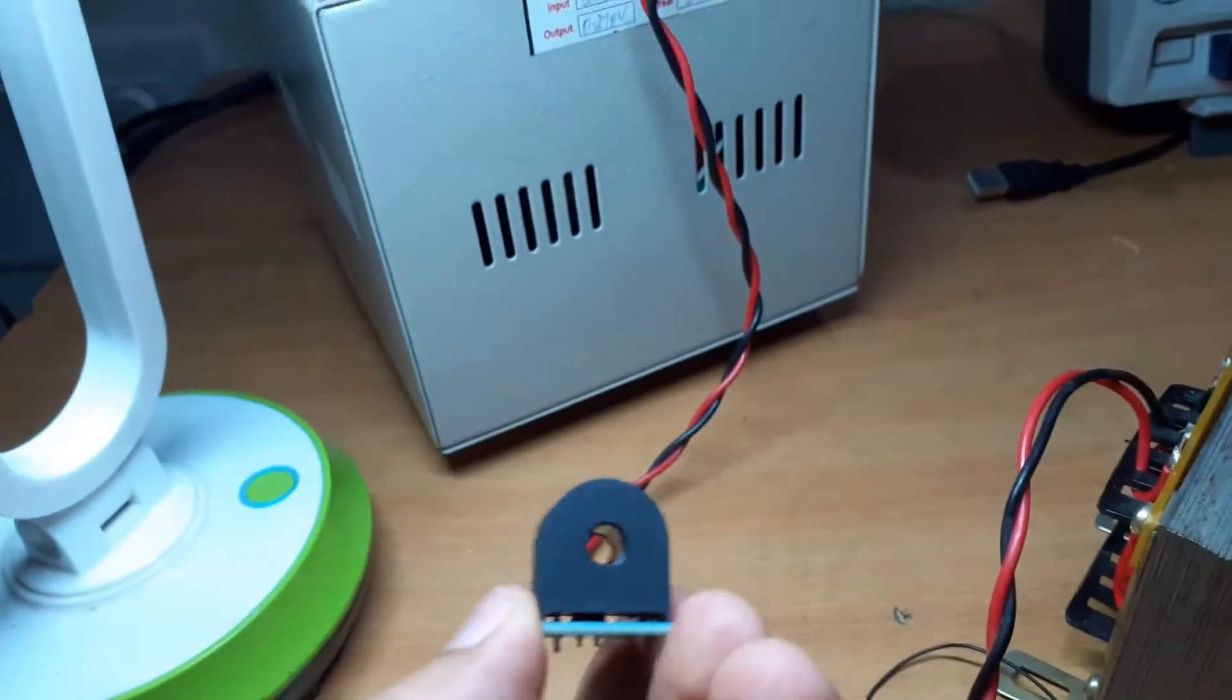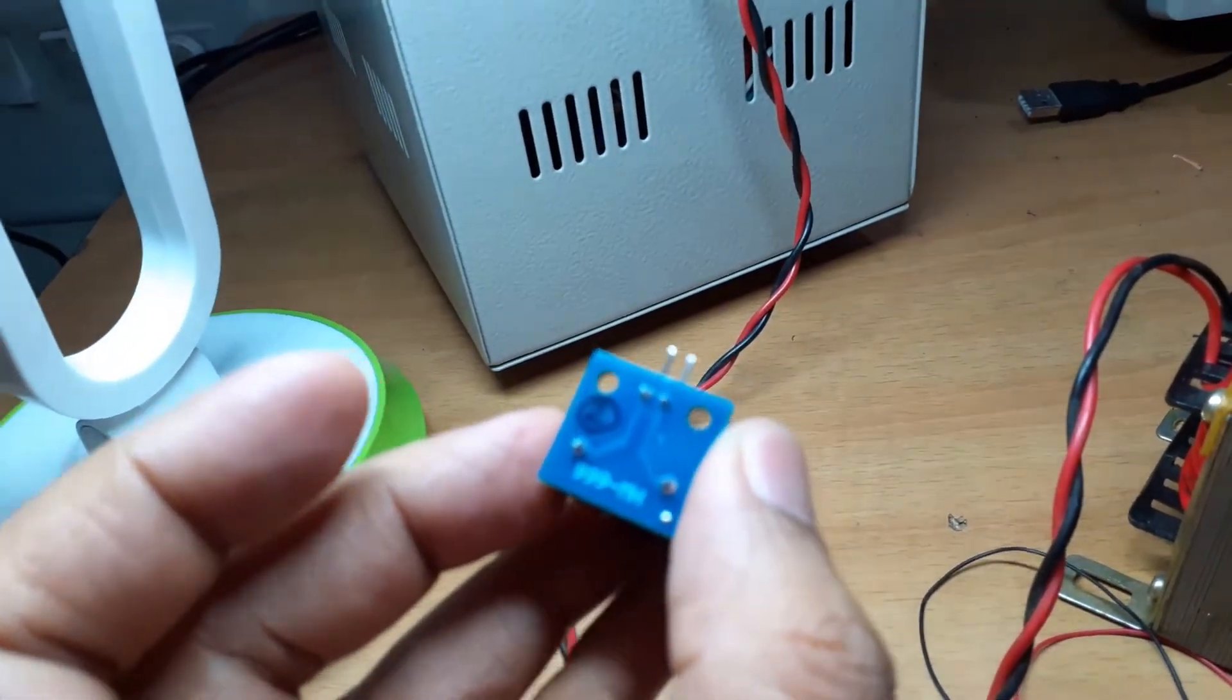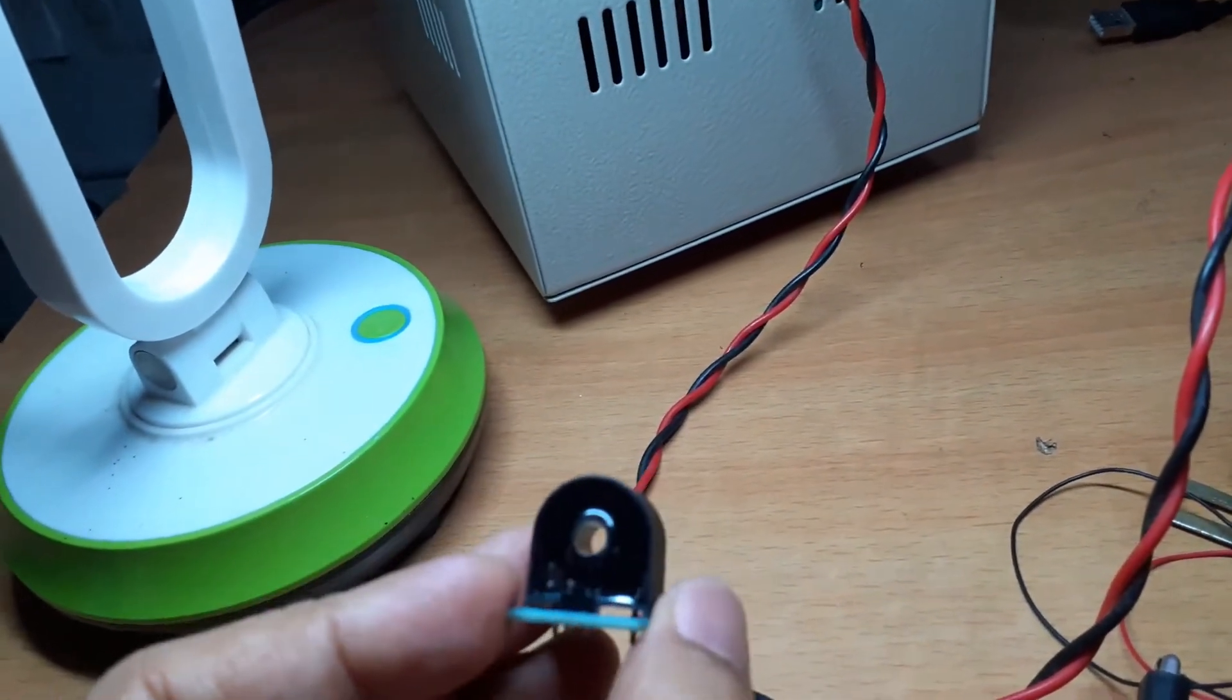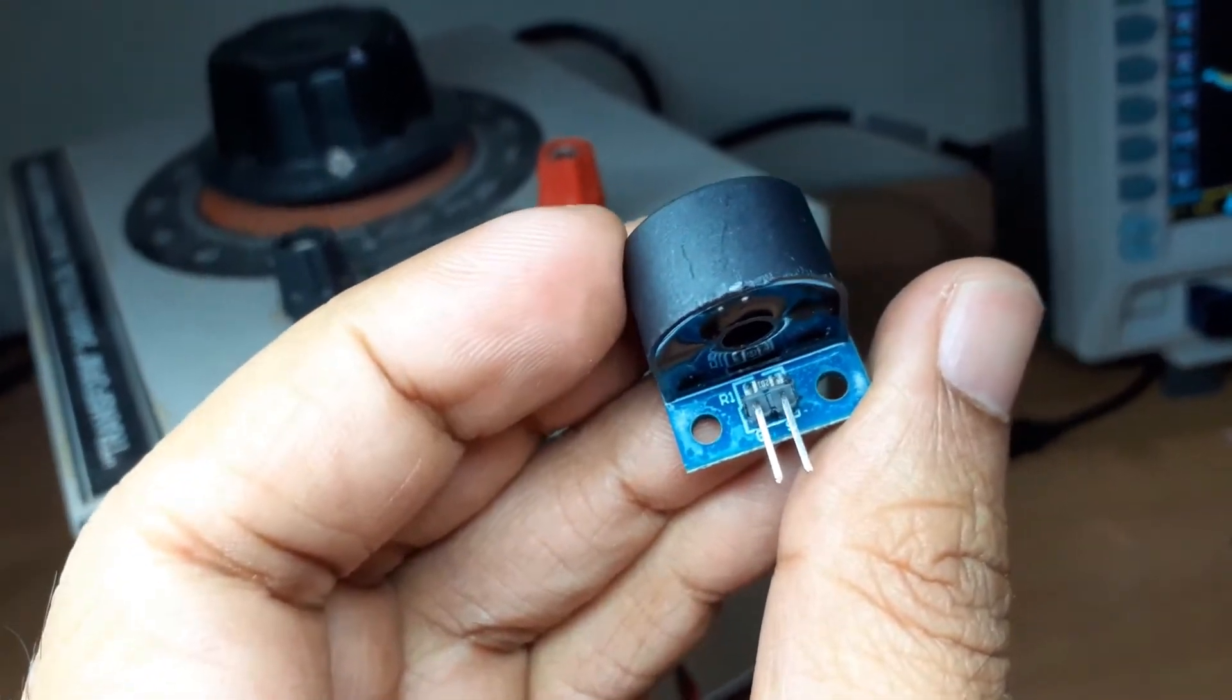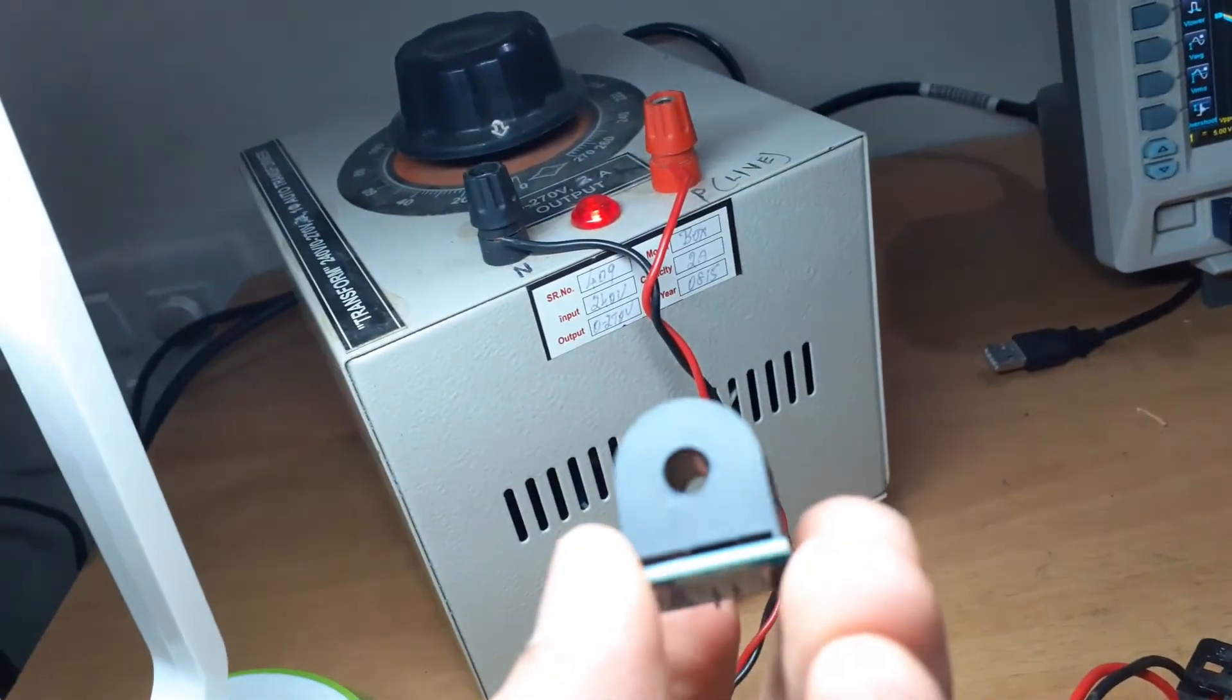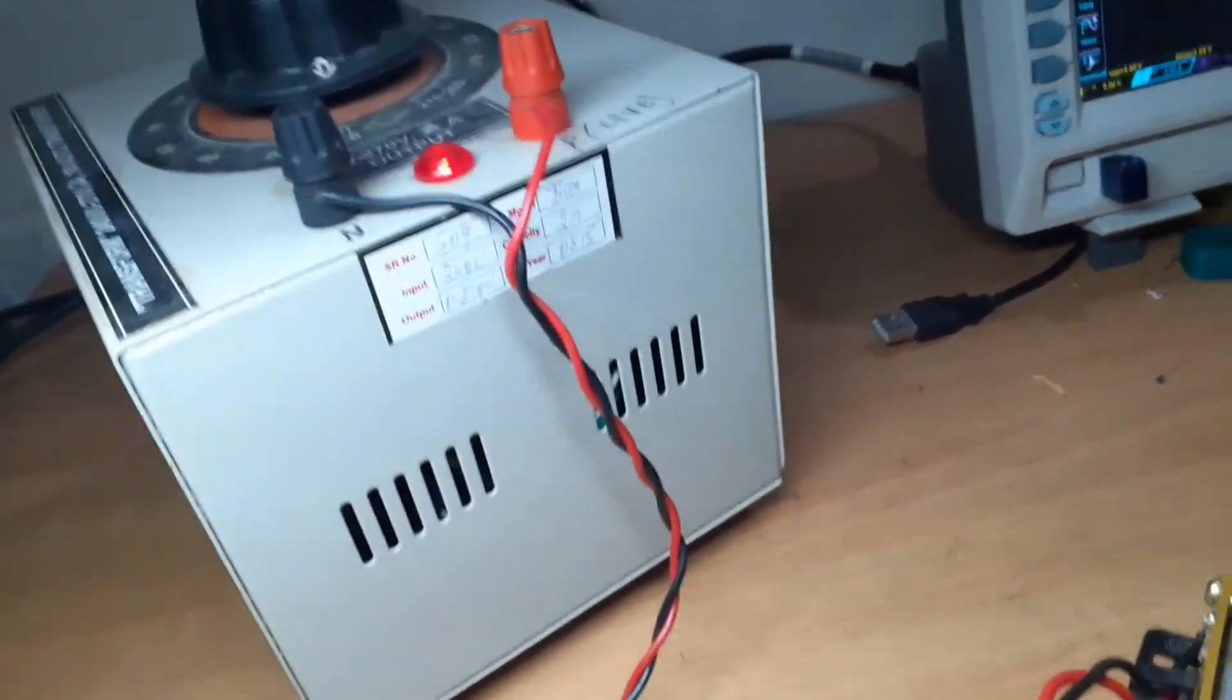So recently I purchased these current transformers - they're just generic modules available over eBay or Amazon. The rating is about 5 amps and I measured the burden resistor here, you can see the SMD component, it's about 200 ohms. These CTs are pretty low cost.